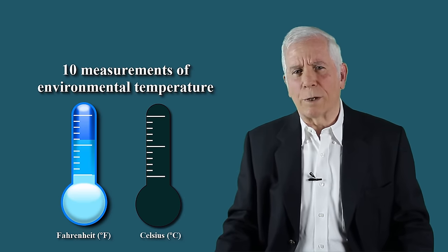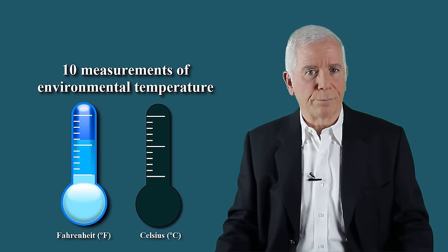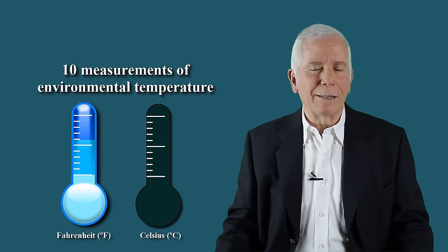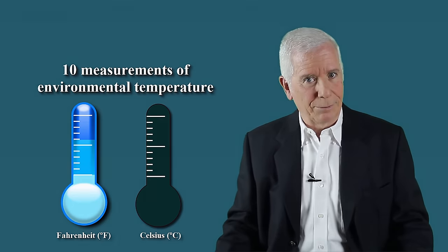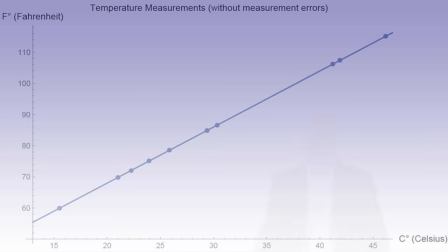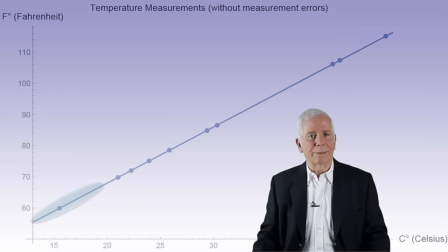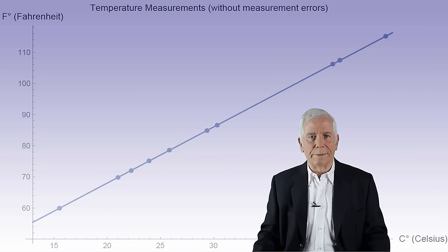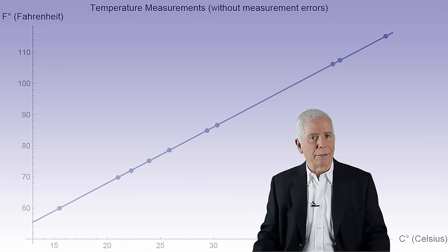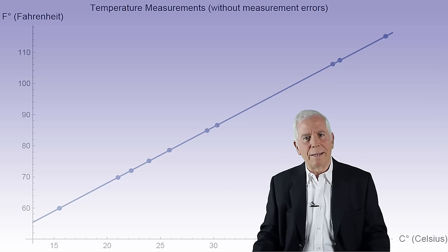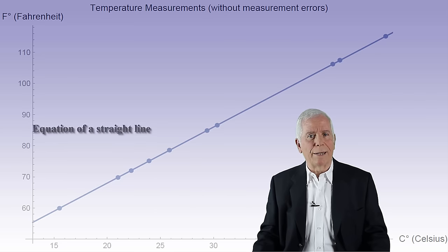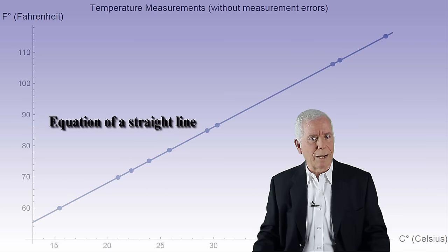If measurements were free of measurement error, drawing them in a plot would produce a curve that looks like this. The reason for the straight line is because transition from one scale to another is achieved by multiplying by a certain number and then adding another number. In other words, we obtain an equation of a straight line.